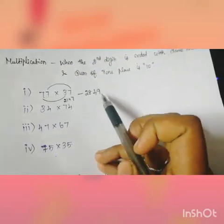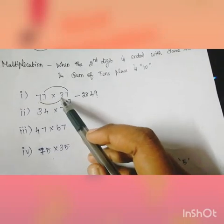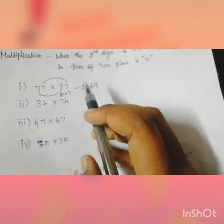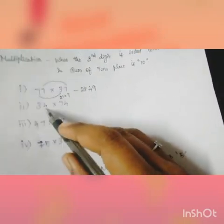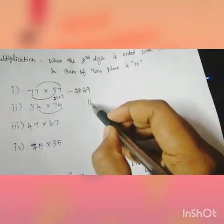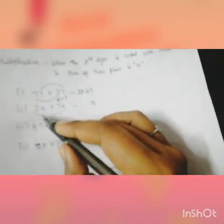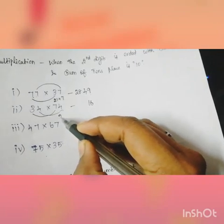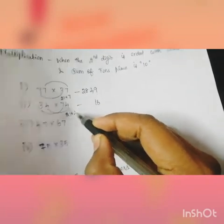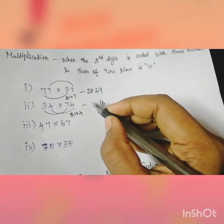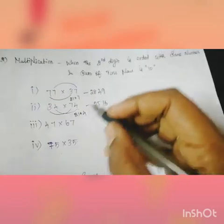Next, 4 into 4 is 16. 7 into 3 is 21, plus common number 4. Actual answer is 2516.